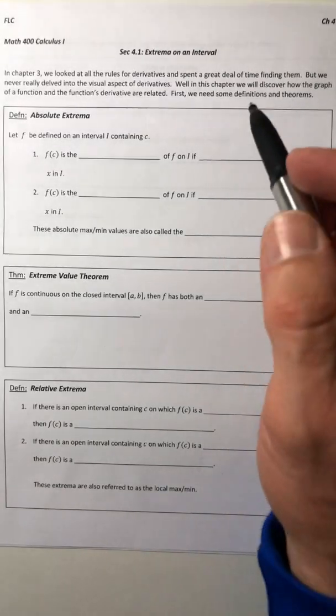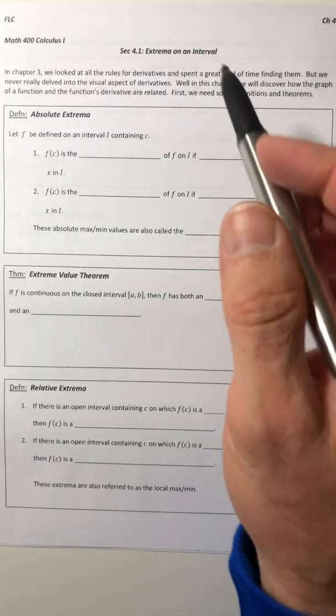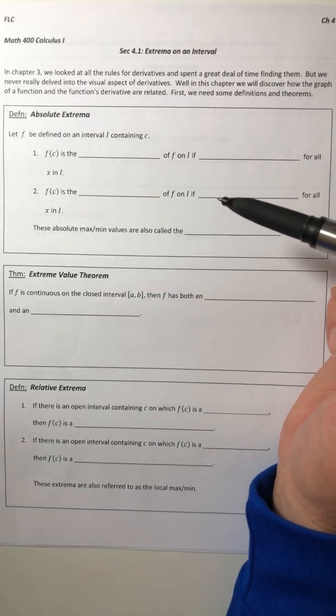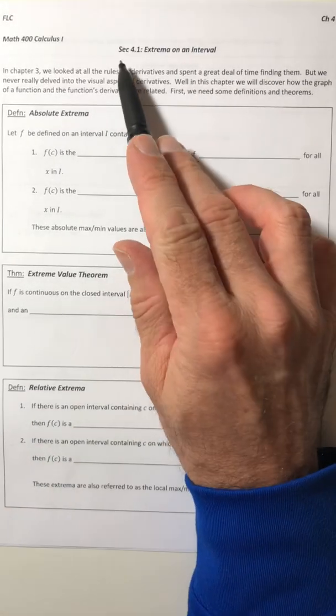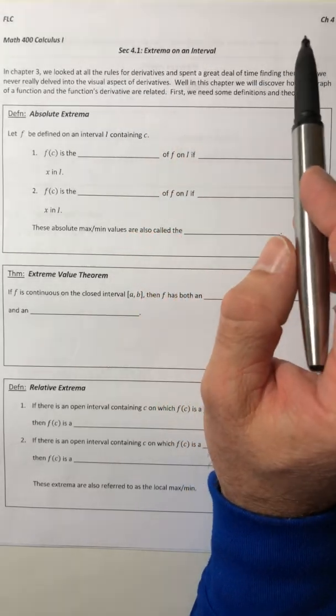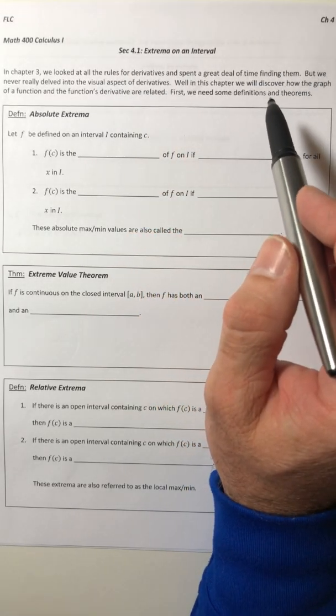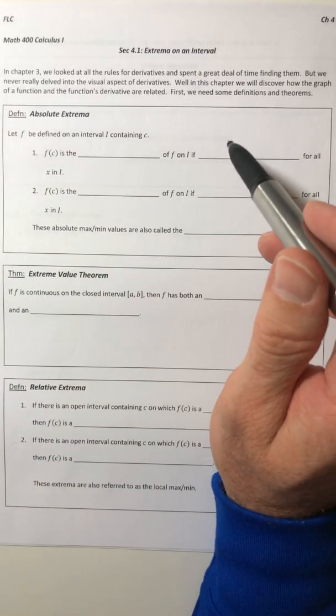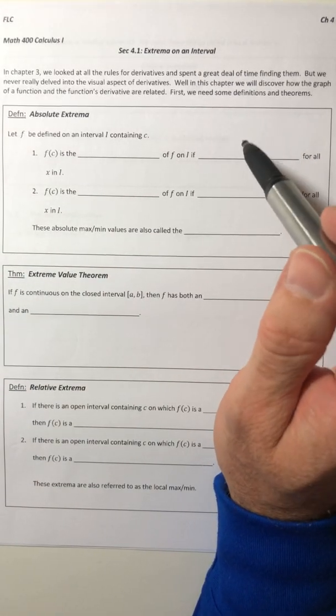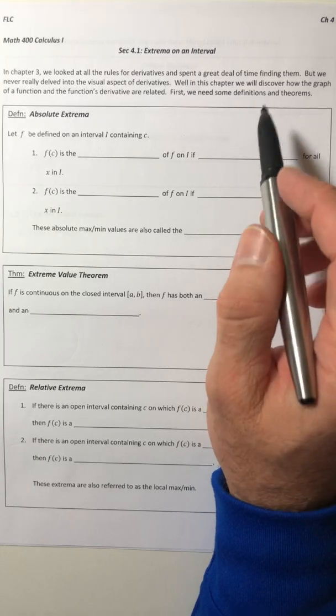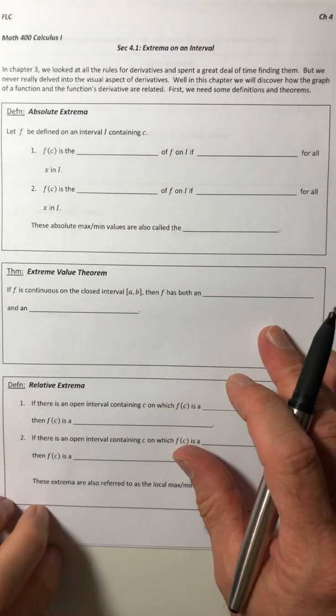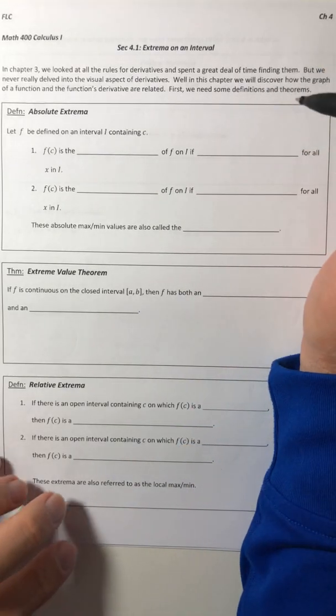And so we begin chapter four. Chapter three, we looked at all of the derivative rules with some application. Chapter four, we're going to see how the derivative relates to the graph of a function. We've talked about it a little bit, but not a whole lot. So this is now going to be a visual aspect of derivatives as well as algebraic.